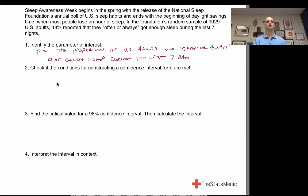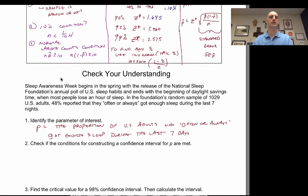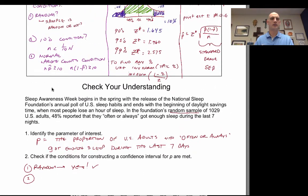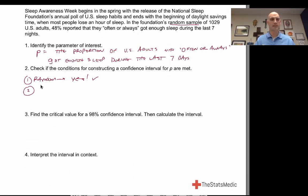The parameter of interest is P — the proportion of US adults who often or always got enough sleep during the last seven days. Now check the conditions for constructing a confidence interval for P. First: is this a random sample? Yes — they stated it was random. Condition one: check.